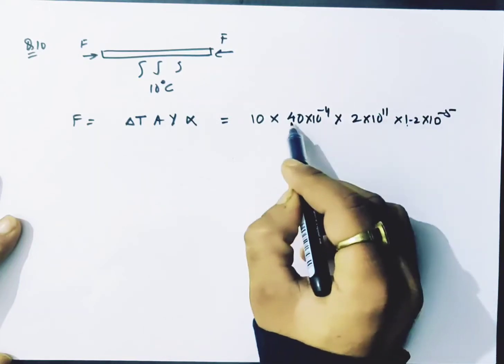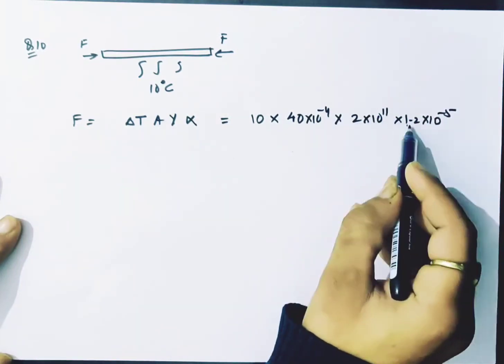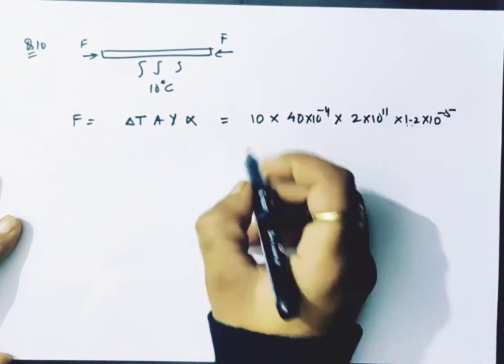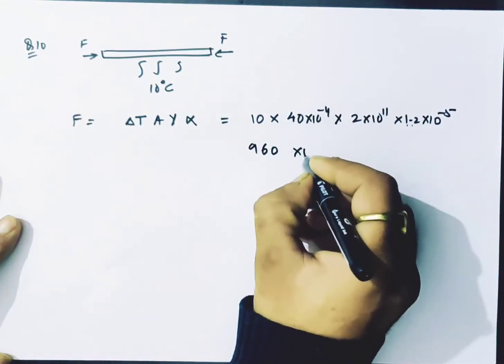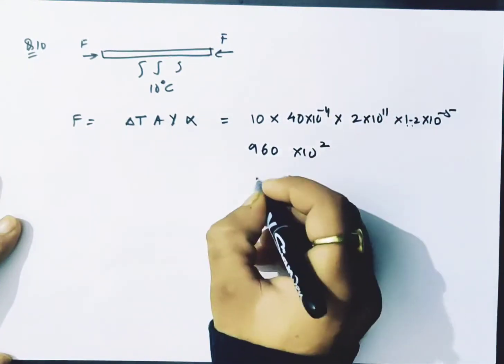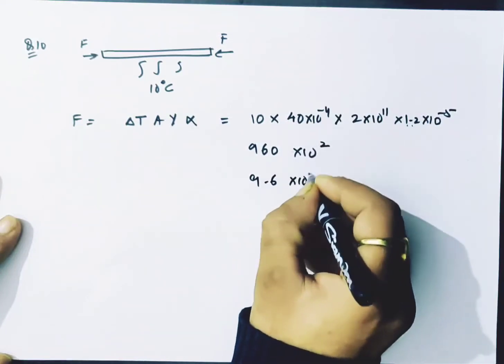80 into 1.2×96 is 960×10⁻². So we have 9.6×10². To power 10, so if there was any option that was there.